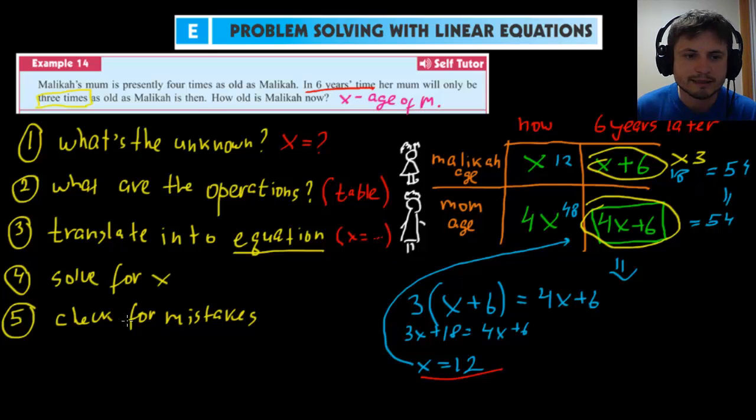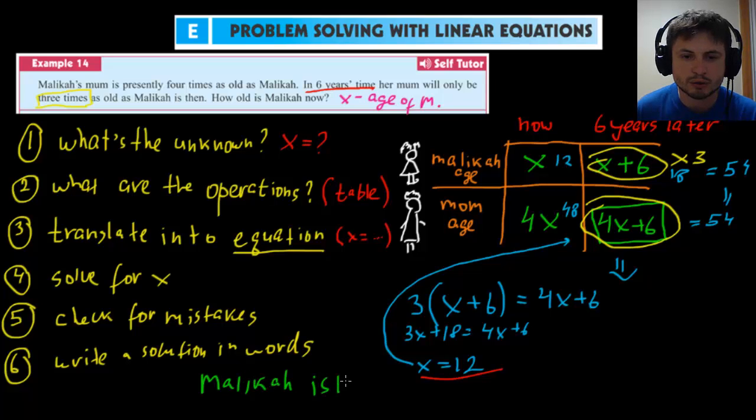And the last step, number six. And that's when you have to, because this is a word problem, you have to write a word solution. Write a solution in words. Basically answer the question verbally. So in other words, what we have to write is, what's the question? How old is Malika now? The answer is Malika is 12 years old now. 12 years old. And circle the 12. And that's it. That's really the solution to this question.